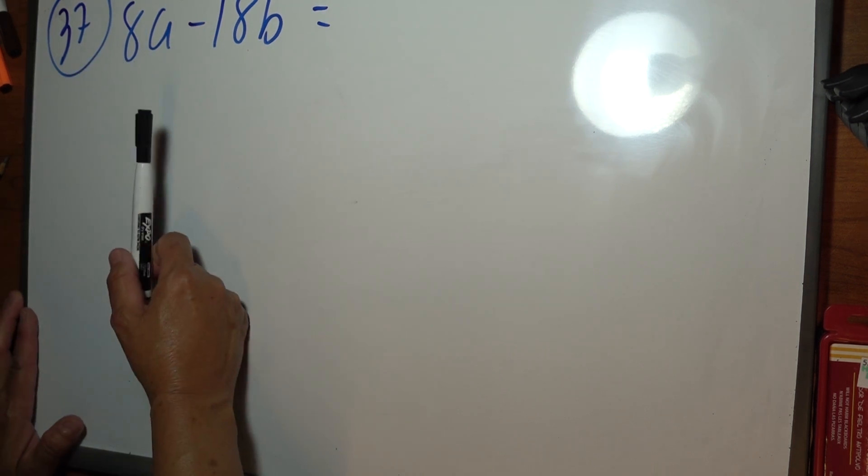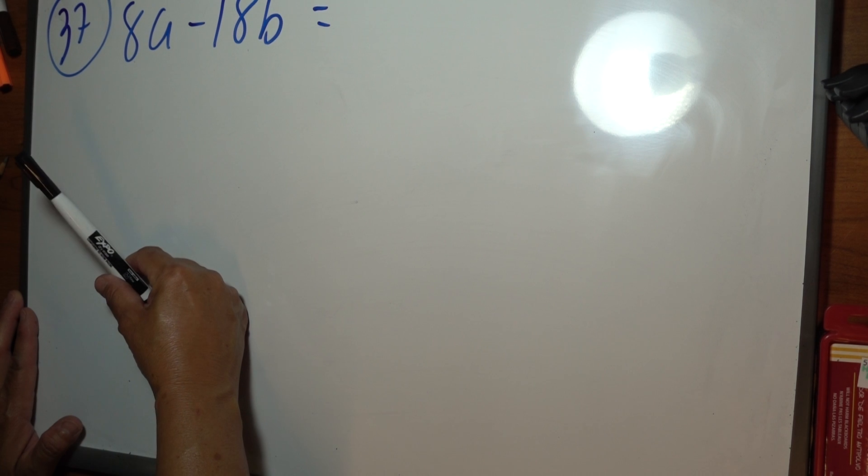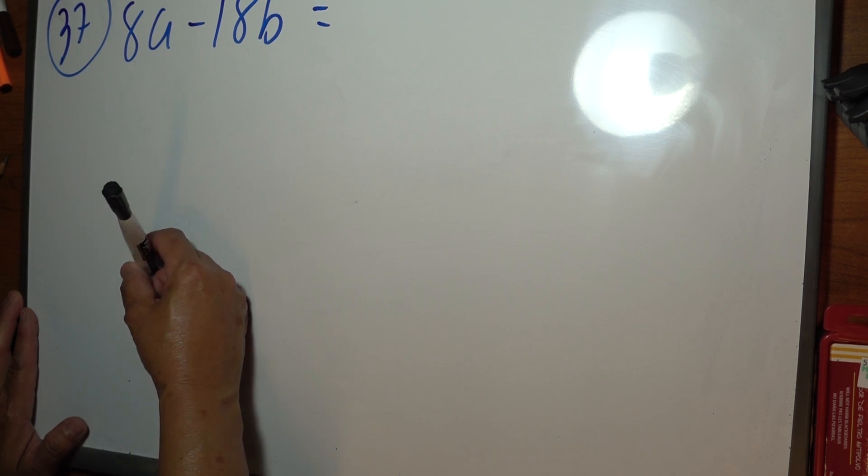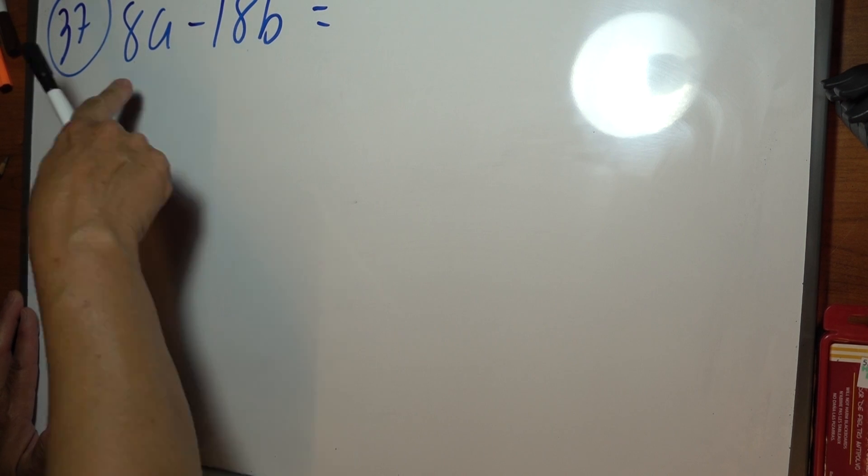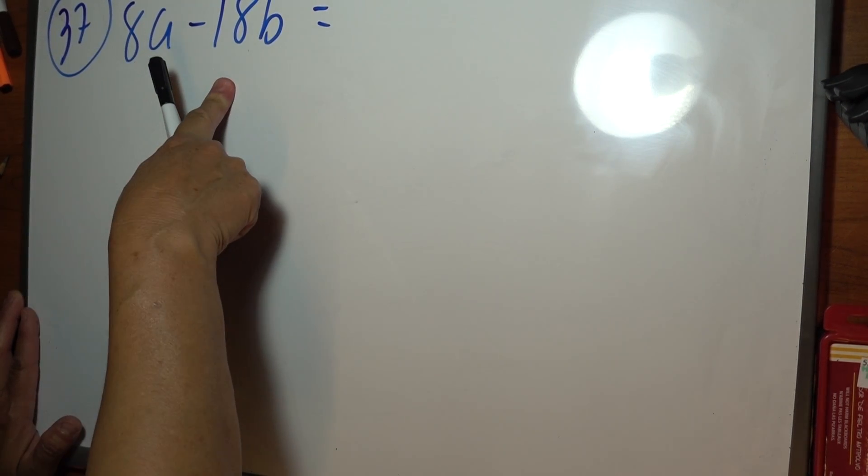Remember first, before you start trying to look for difference of squares or difference of cubes or anything like that, check if you have a greatest common factor, which we do. 8 and 18, the greatest common factor is 2.